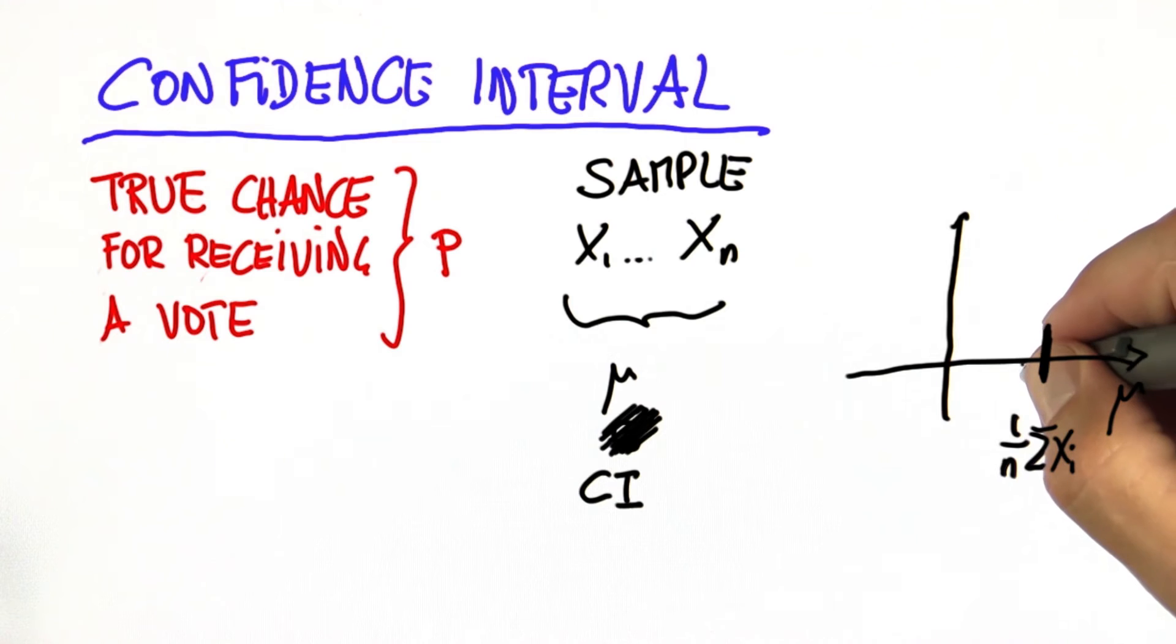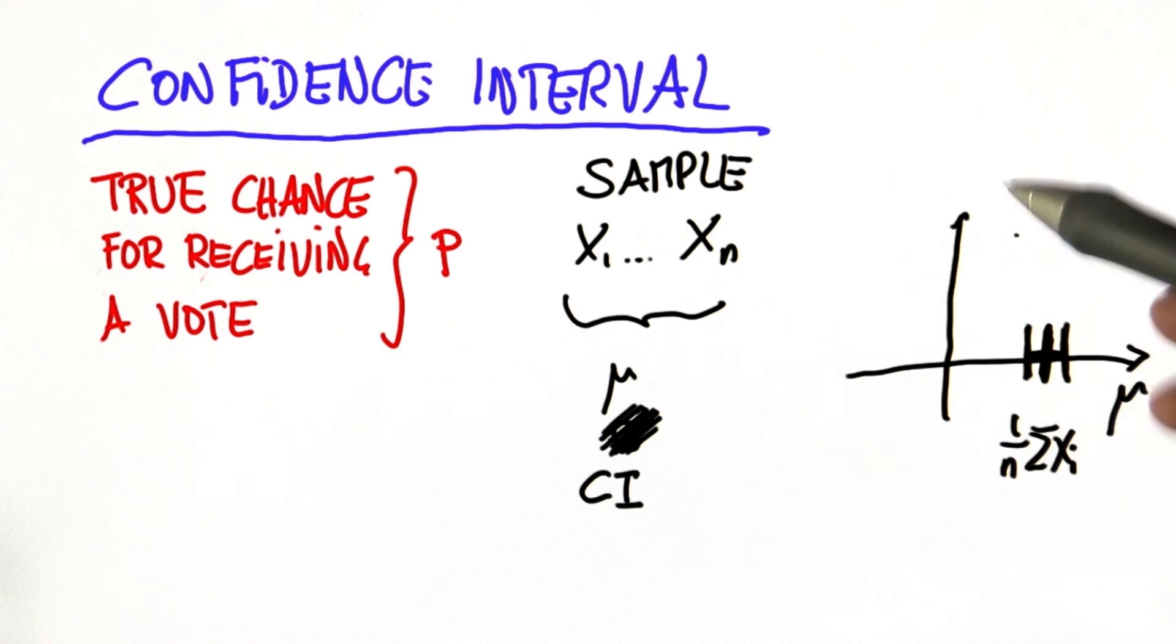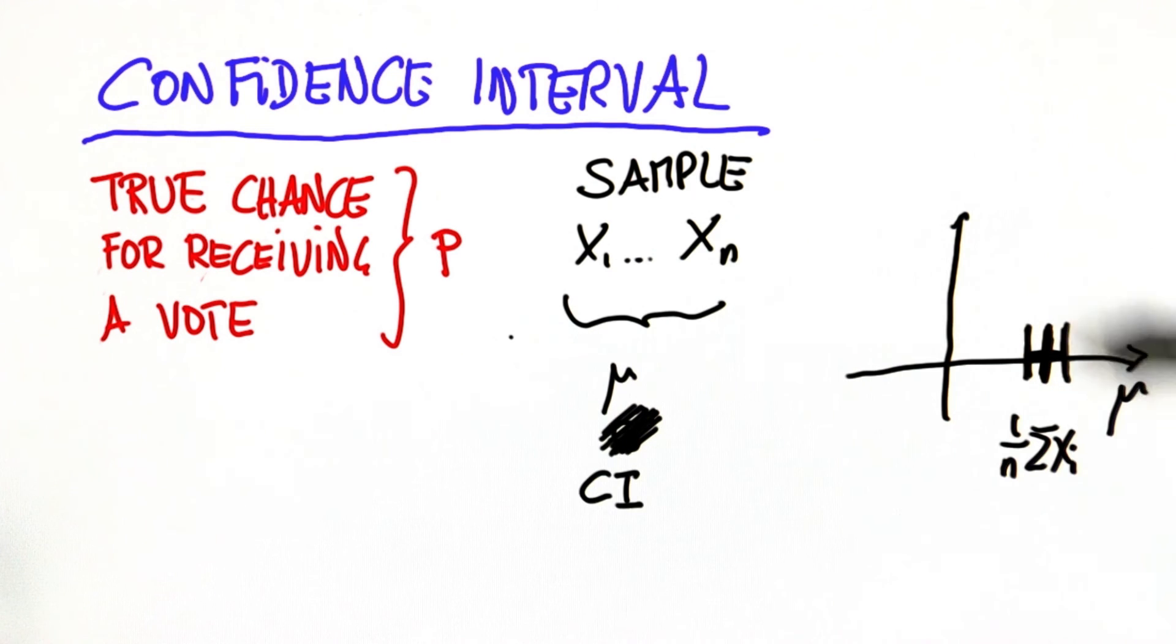But we are not quite certain, so we're going to assess a wider range in which we believe with high probability that the outcome will be within this range.